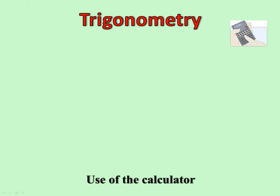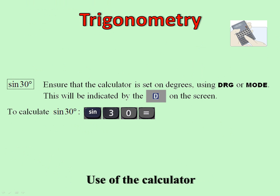Use of the calculator is very straightforward, because it goes virtually as it's written. Sign of 30, so we enter sign 30, equals. Notice, make sure that it's on D on the screen, DRG modes, it's using DRG or mode, make sure it's on degrees.